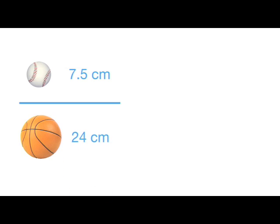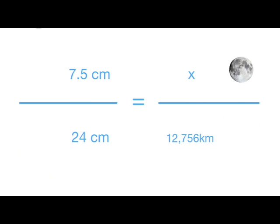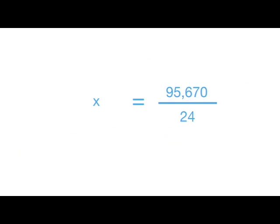Baseball over basketball equals x, because that's what we're trying to find out, over the Earth's diameter. And we know that because we live here. So that's 12,756 kilometers. Now cross-multiply and solve for x.